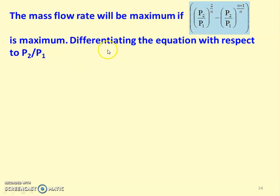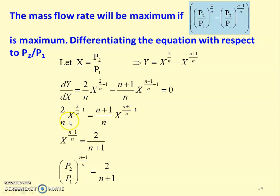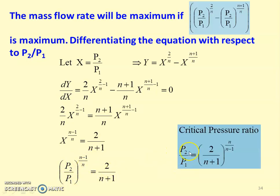The mass flow rate will be maximum when the expression (P2/P1) to the power 2/n minus (P2/P1) to the power (n plus 1)/n is maximum. To find the maximum, differentiate with respect to P2/P1. Setting X equals P2/P1 and Y equals X to the power 2/n minus X to the power (n plus 1)/n, then dY/dX equals (2/n) X to the power (2/n minus 1) minus ((n plus 1)/n) X to the power ((n plus 1)/n minus 1) equals 0. Rearranging gives X to the power (n minus 1)/n equals 2/(n plus 1), so the critical pressure ratio is: P2/P1 equals (2/(n plus 1)) to the power n/(n minus 1).